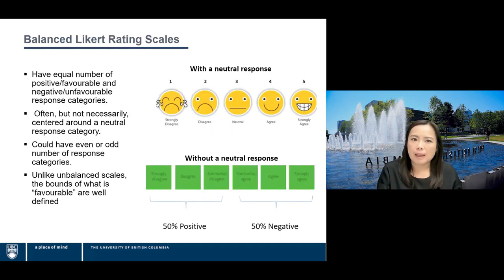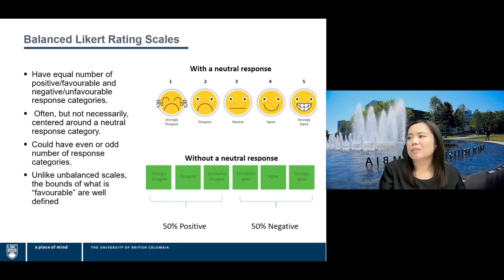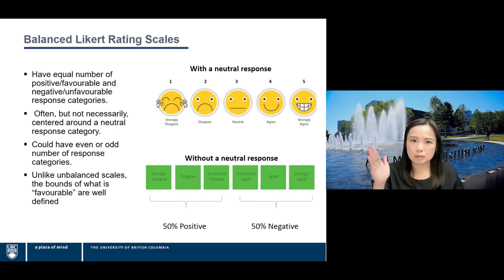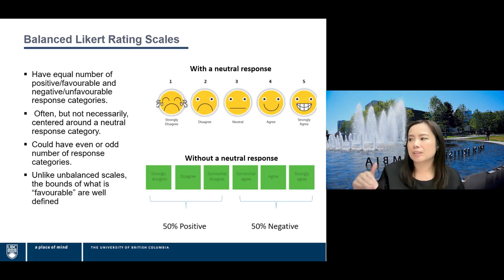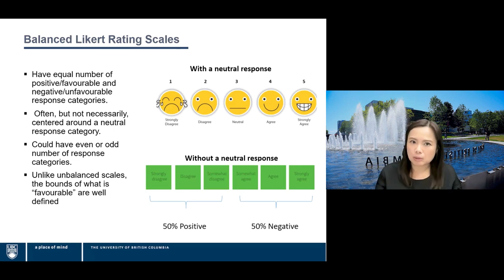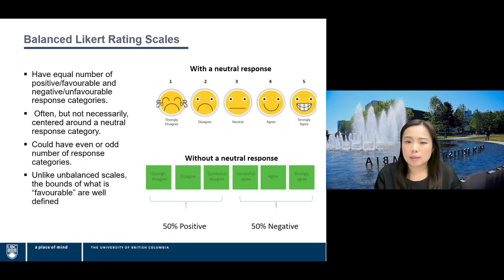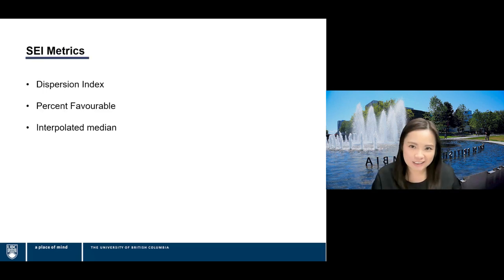A balanced Likert scale has an equal number of positive (favorable) and negative (unfavorable) response categories, often — but not necessarily — centered around a neutral midpoint. It can have either an even or odd number of response categories. Unlike unbalanced scales, the bounds of what is favorable are well-defined, falling clearly on either side of the neutral point.